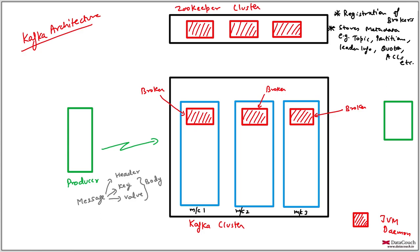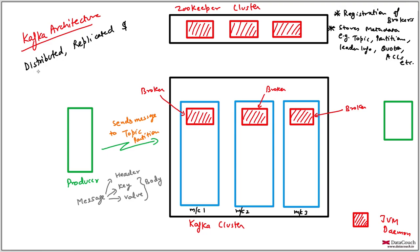Right now, I'm assuming there is no key in the message — just a simple message with some value. When a producer produces the message, it produces to a topic, specifying the topic name. The producer sends the message to a topic partition. The high-level summary of Kafka is that it is a distributed, replicated, and partitioned commit log.